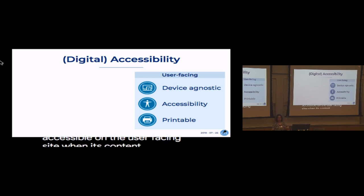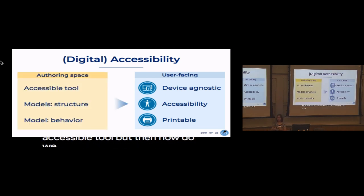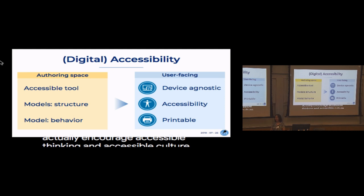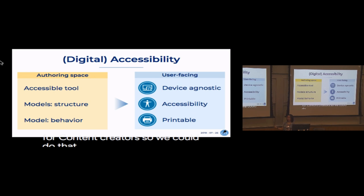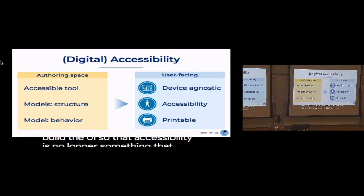So how do we build something that is accessible on the user-facing side when it comes to content? Wagtail is a CMS and an accessible tool, but how do we build the experience to actually encourage accessible thinking and an accessible culture for content creators? We can do that by having the models be more compliant with accessibility and by building the UI so that accessibility is no longer something you think about — you just do it as a content provider.